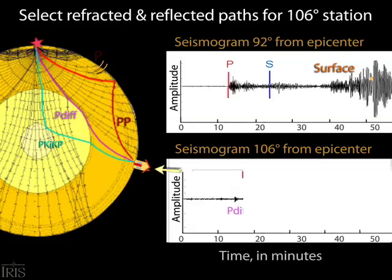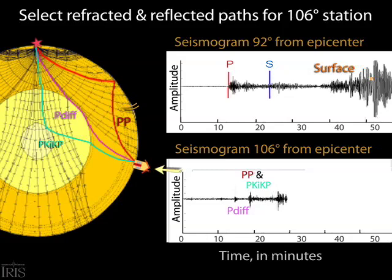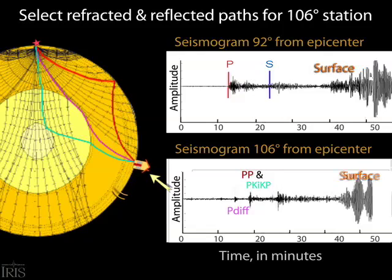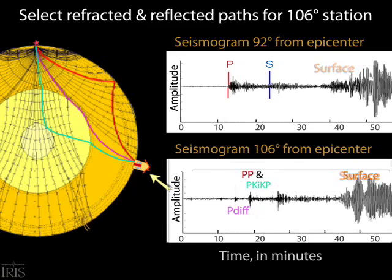Some energy is reflected off the surface and continues its curving path through the mantle. Other energy skirts along the core-mantle boundary and is diffracted back to the surface. Still other waves refract at the outer core-mantle boundary and reflect off the outer core-inner core boundary on their way to the station. When we compare this to the actual seismogram we see that the arrivals are due to these reflections and refractions, therefore revealing that seismic energy does arrive in the shadow zone but through an indirect path.